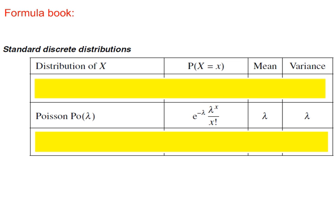In the OCR formula book, there is a formula for calculating Poisson probabilities. The mean and the variance are both the same for the Poisson distribution.